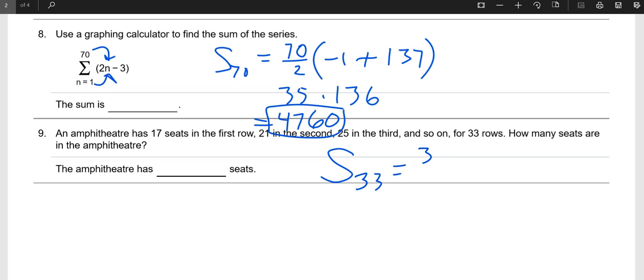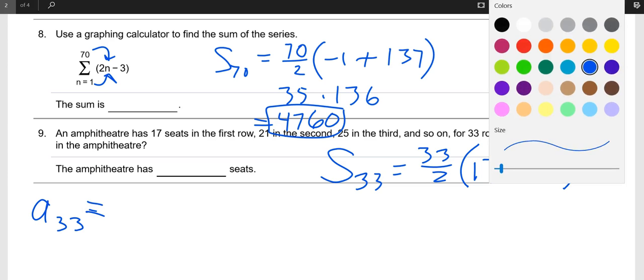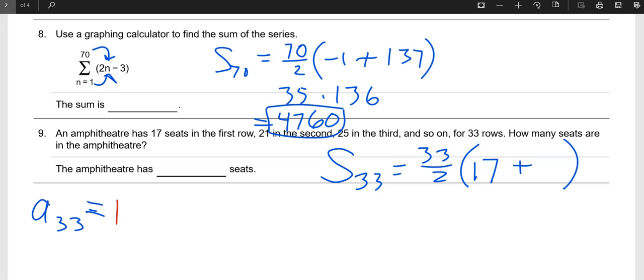Question nine is your amphitheater question. You can see there's a first term of seventeen, seventeen seats in the first row, twenty-one in the second, twenty-five in the third. That's a common difference of four, so we know that it's arithmetic. It's got thirty-three rows. So we know using little Carl's formula that we have thirty-three rows. We know the first one's seventeen. We don't know what the last one is. That's the big part of this question that we're trying to figure out here.